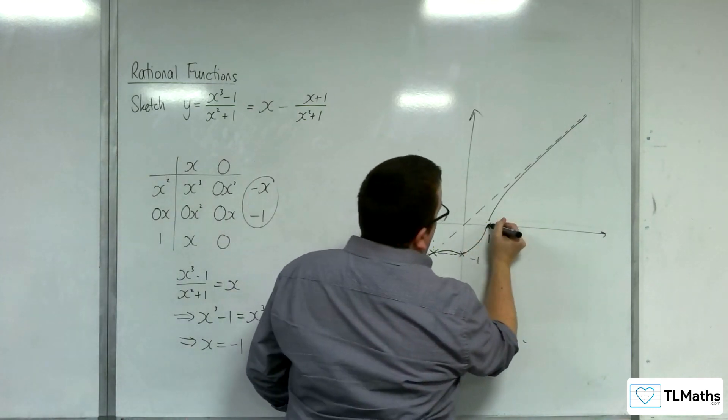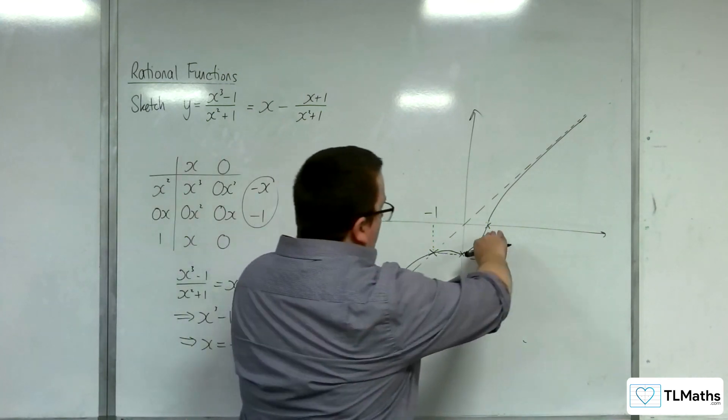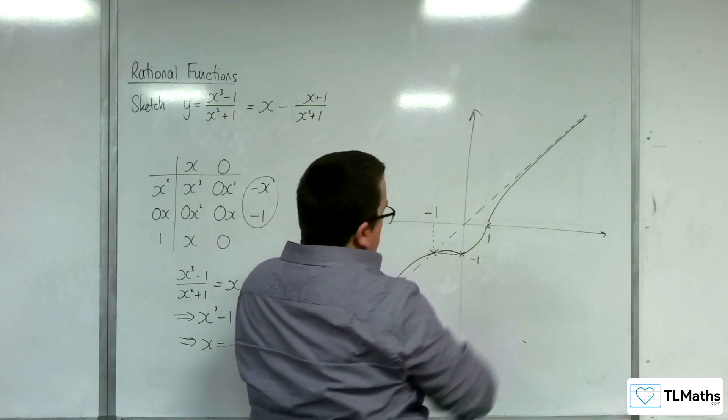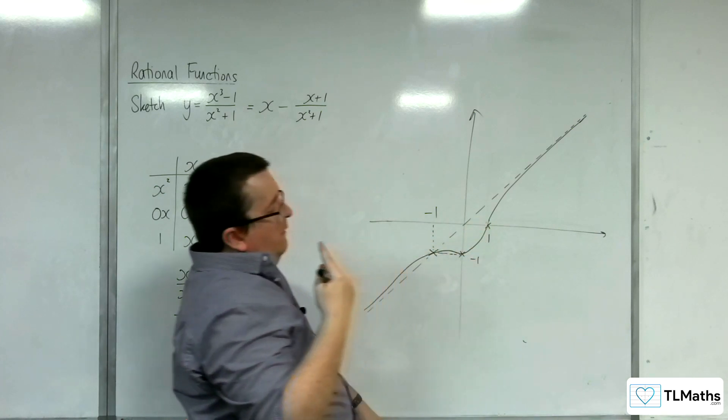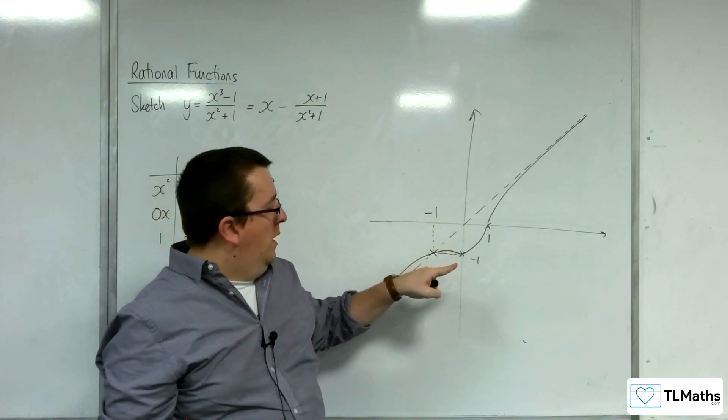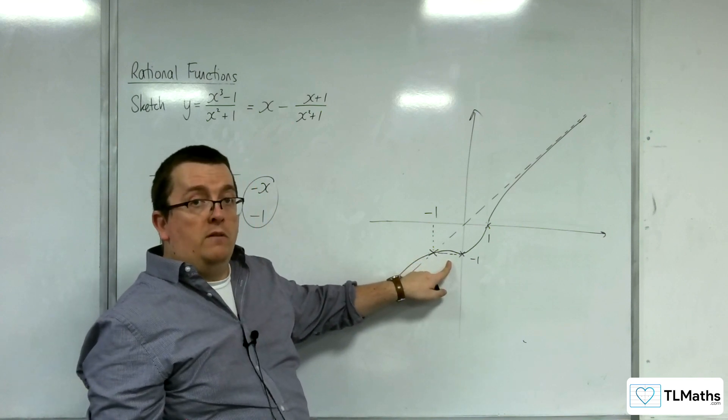Should we have a look? The way to determine that, would be, does it bounce there? Or, does it bounce there, and come around that way? What we would need to do, is we'd need to substitute in a point between 0 and minus 1. And see if we're getting a value that is above or below minus 1.